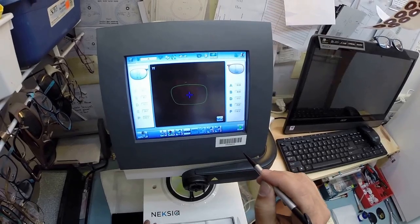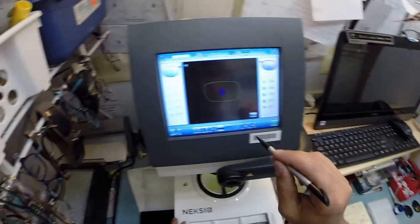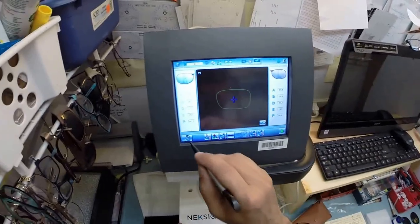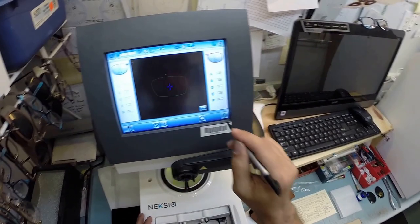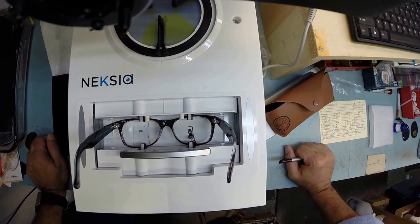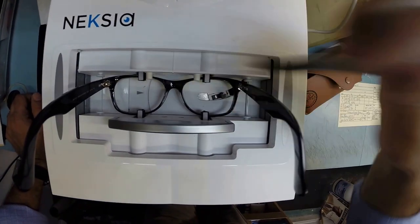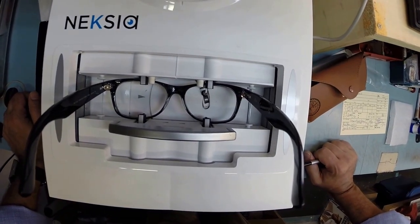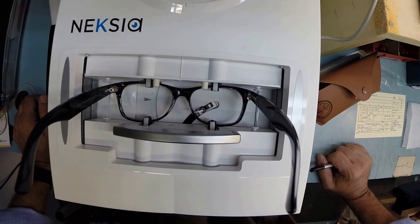I got to hit a couple buttons here. There we go. Now this little stylus is going to go around and trace the shape of the right lens before moving over and tracing the shape of the left.